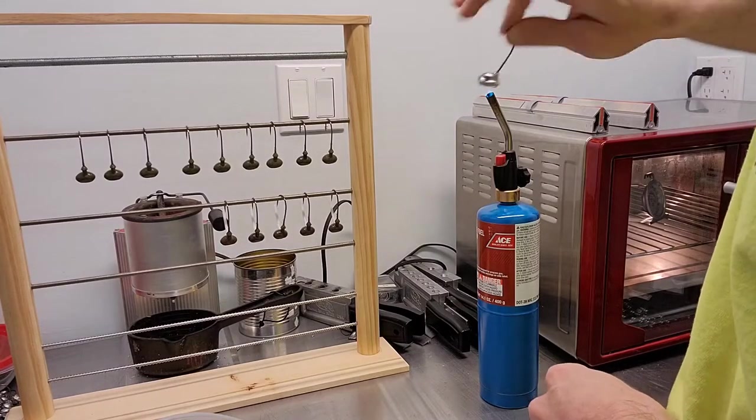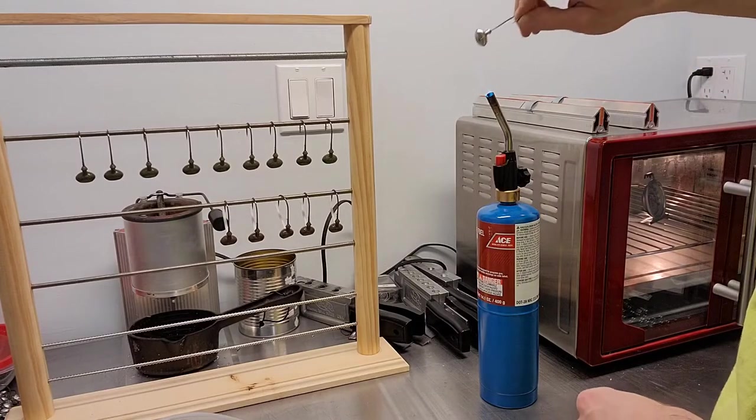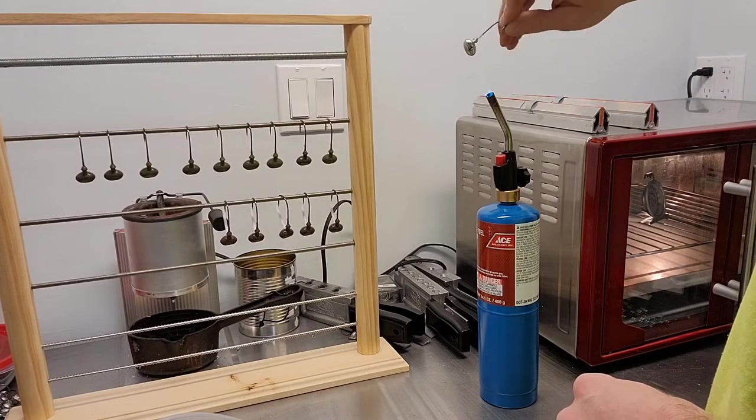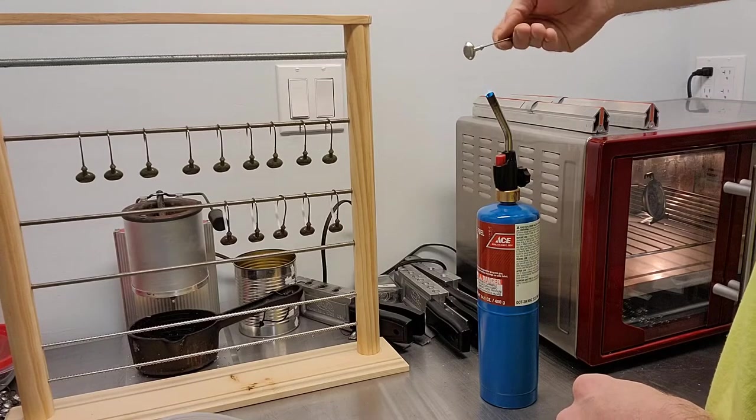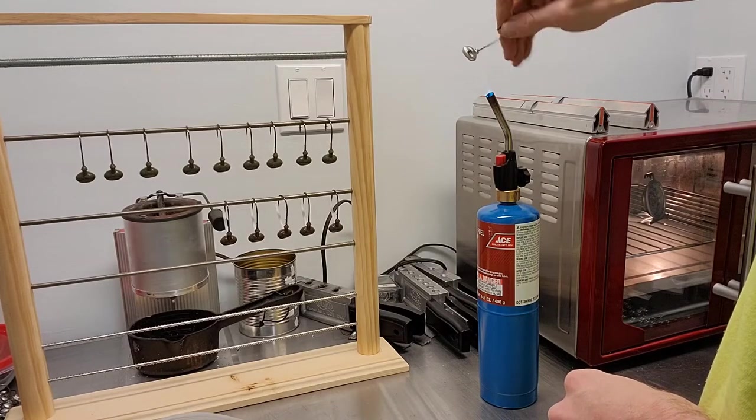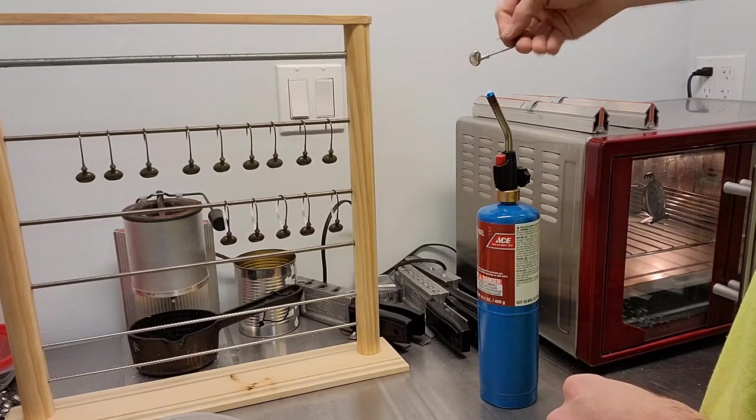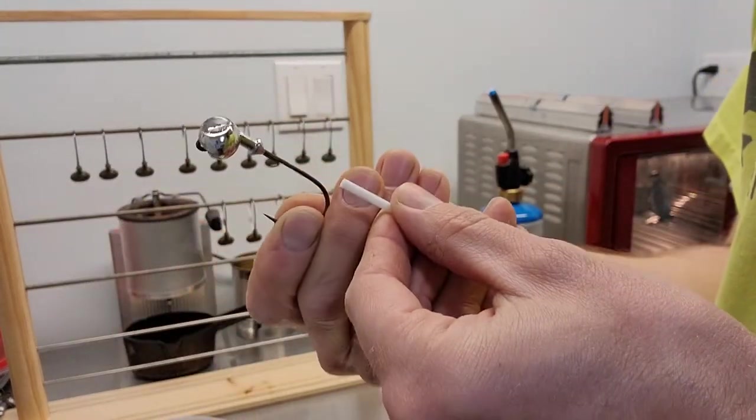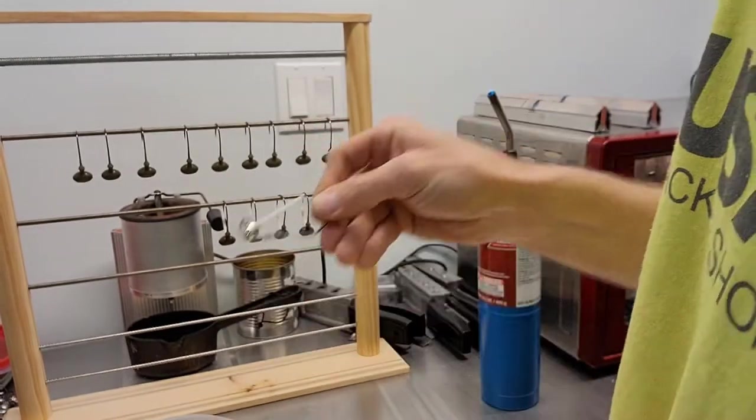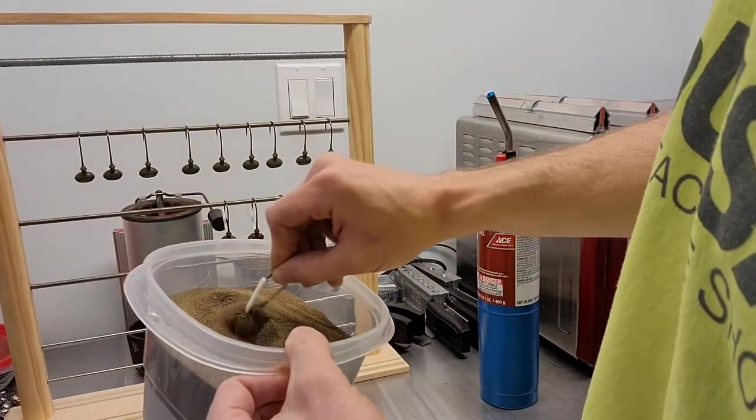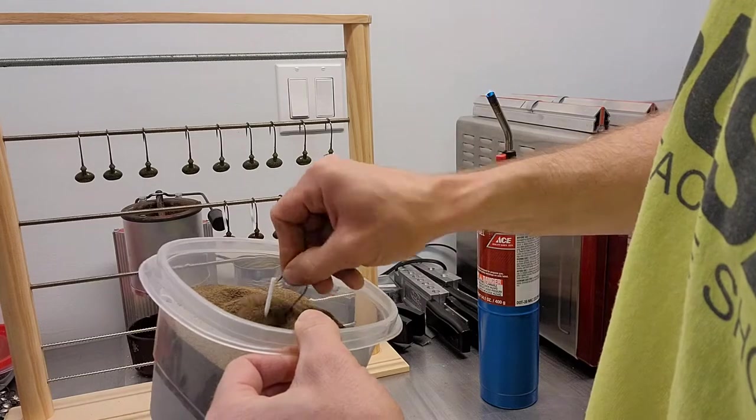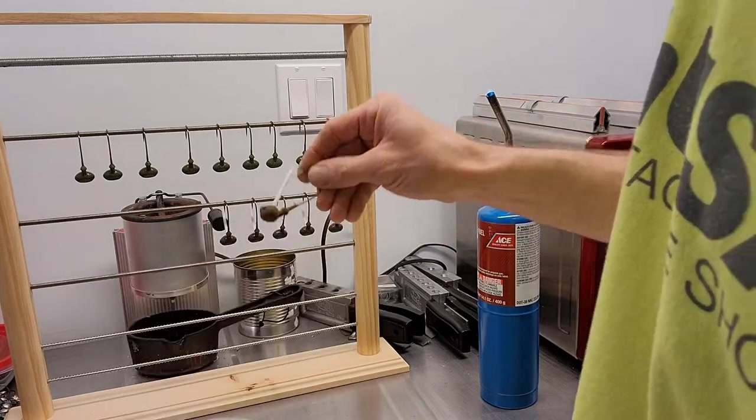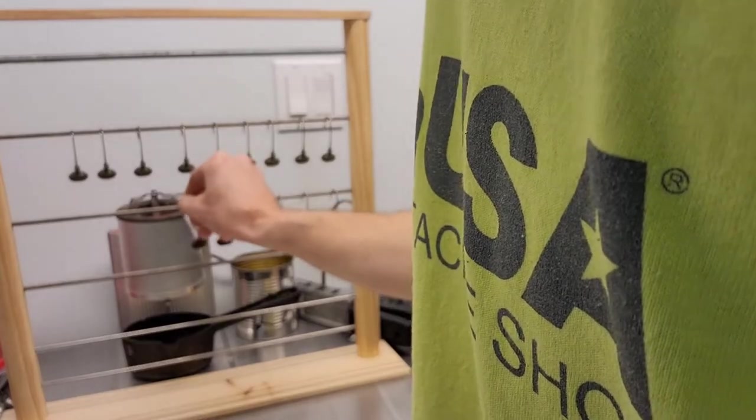If you do this enough, you'll get carpal tunnel. I like to rotate it and try to put even heat. You see it getting shiny. It's almost like it's melting. It's just right at that point where that lead is going to start to melt, right at the melting point.